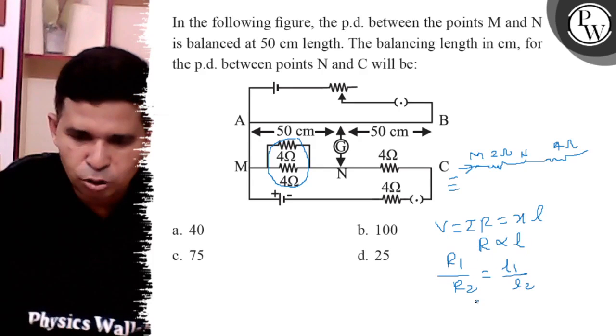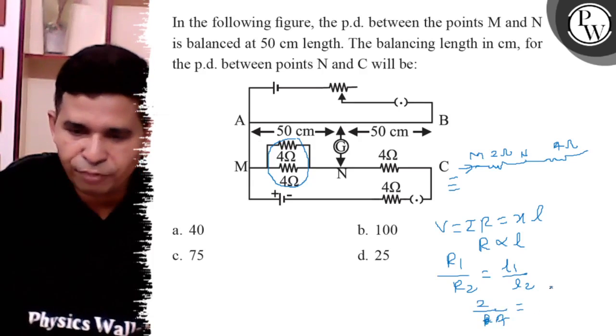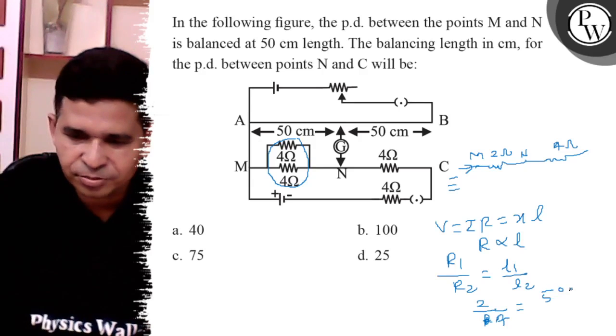R1 is given as 2 Ohm, R2 is given as 4 Ohm, and L1 is 50 cm. We have to determine L2.